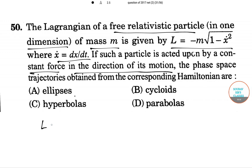The Lagrangian is given as L equals minus M times root over of (1 minus x-dot squared) minus V, which is a function of x. This is the Lagrangian.